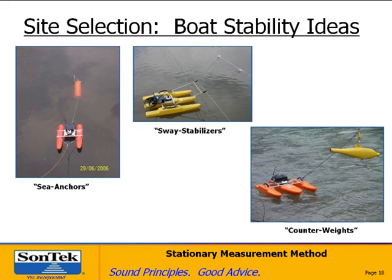Let's talk about boat stability. Stability is a big issue. On the far left is what we call a sea anchor — a little net that can be deployed behind the River Cat. It works very well; in the pictured case, the wind was going upstream with water velocities on the order of five to six centimeters per second, causing the boat to be pushed under the bridge. Once we deployed the sea anchor, the current could pull against it and keep the boat downstream and very stable.